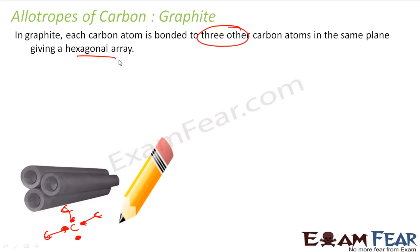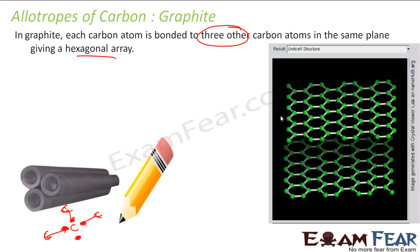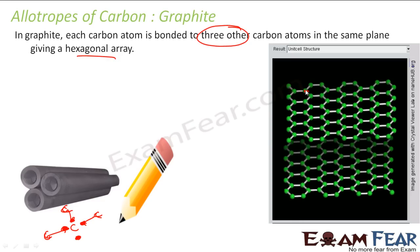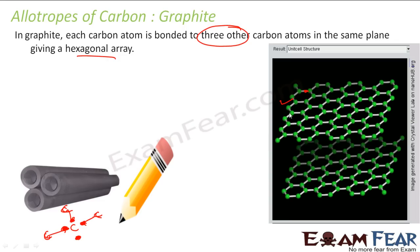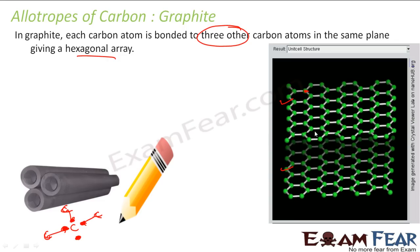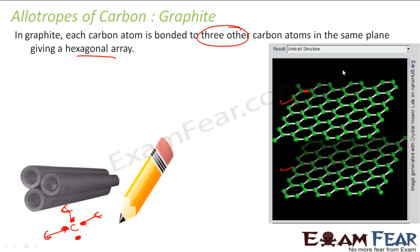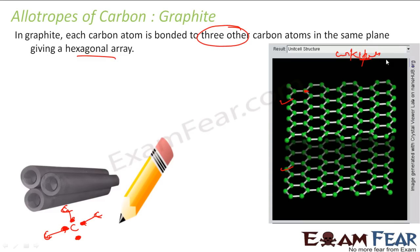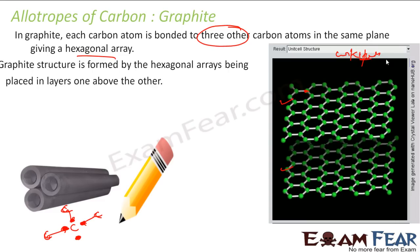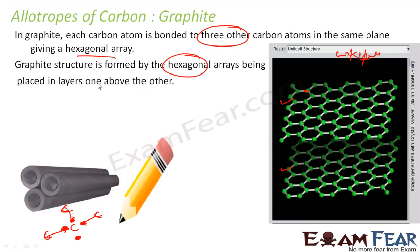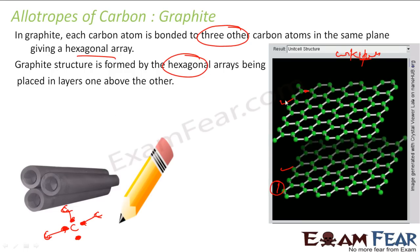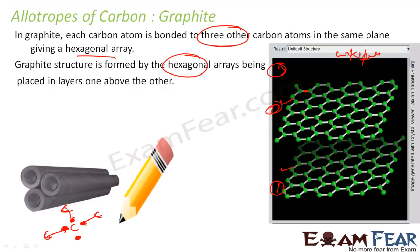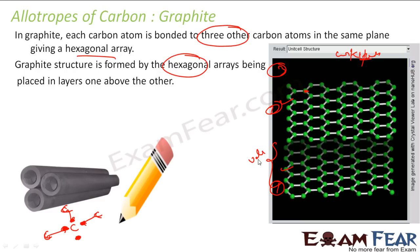Graphite forms a hexagonal array structure. The hexagonal layers are placed one on top of another — layer one, layer two, layer three — and these layers slide over each other. There is a very weak force of attraction between the layers, called the van der Waals force. That is why graphite is smooth and slippery.